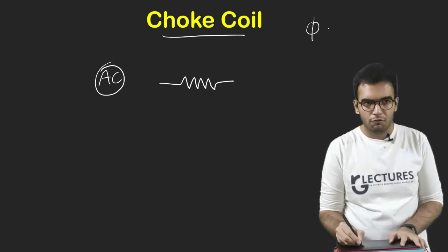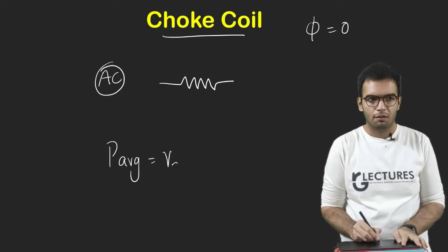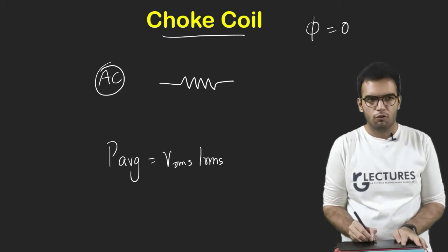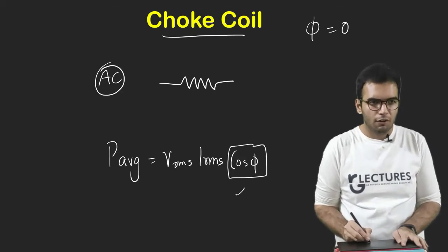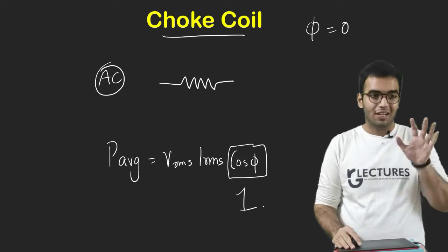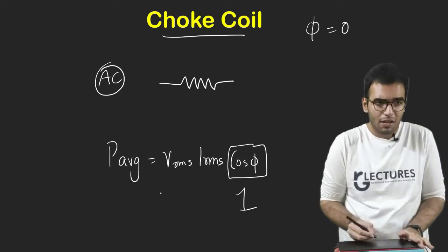But as we discussed in the power factor video, in a resistance the phase difference is zero. What is my power? Power is equal to Vrms, Irms, cos φ. Now cos φ is 1 in case of a resistor.